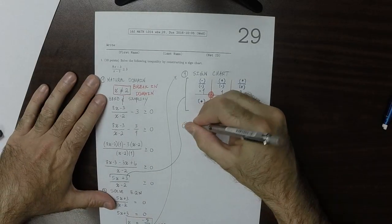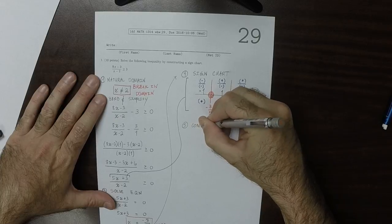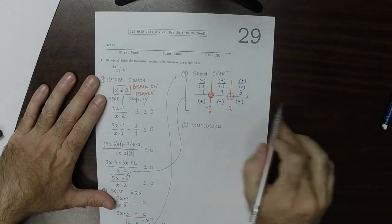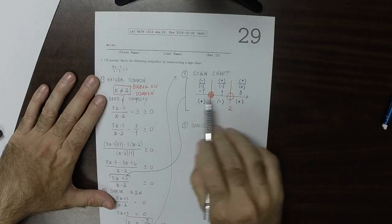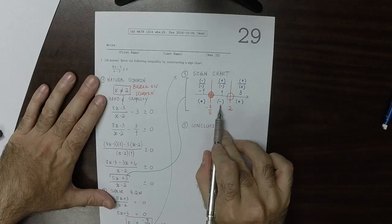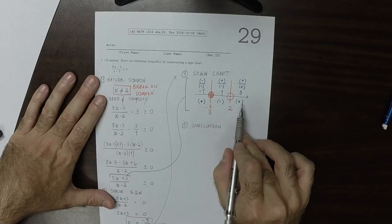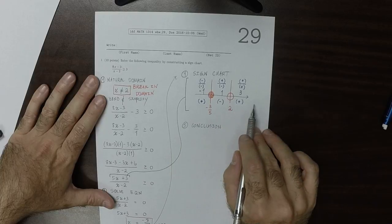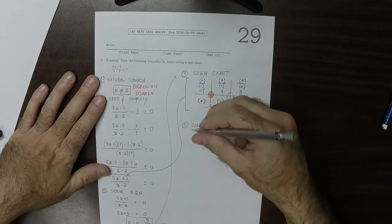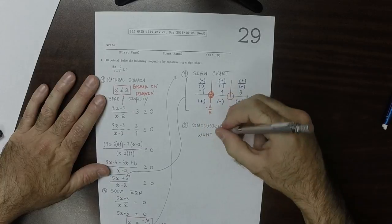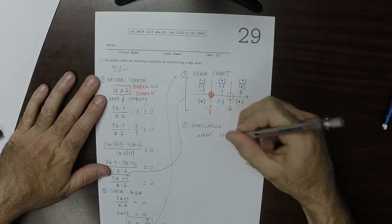So now we can make our conclusion. We took the reals and we cut them into pieces, three pieces in this exercise, and then we labeled each piece as being positive or negative. And we either want all of the positive ones or we want all of the negative ones. So in this specific exercise, we want the positive regions.